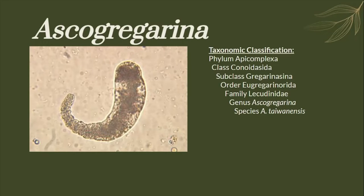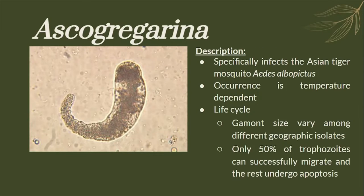The next species is Ascogragarina taiwanensis. Ascogragarina taiwanensis specifically infects the Asian tiger mosquito. Its occurrence is temperature dependent, with the infection rate higher in the summers compared to other seasons.